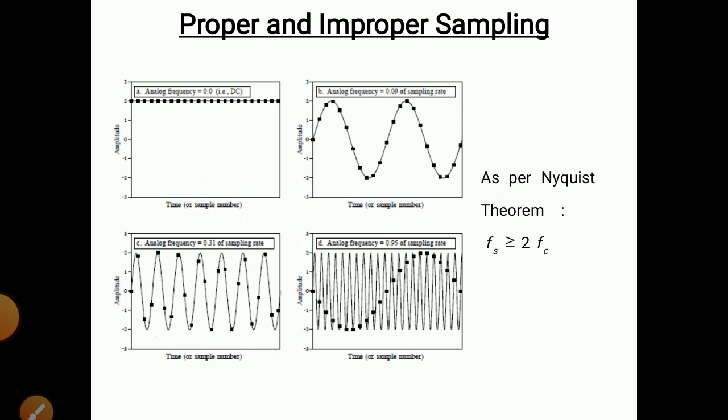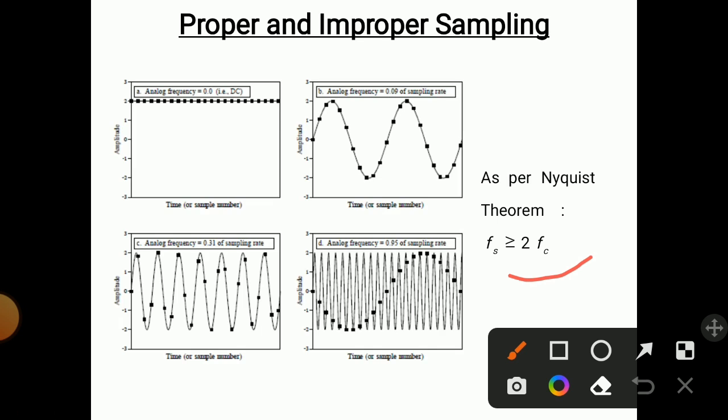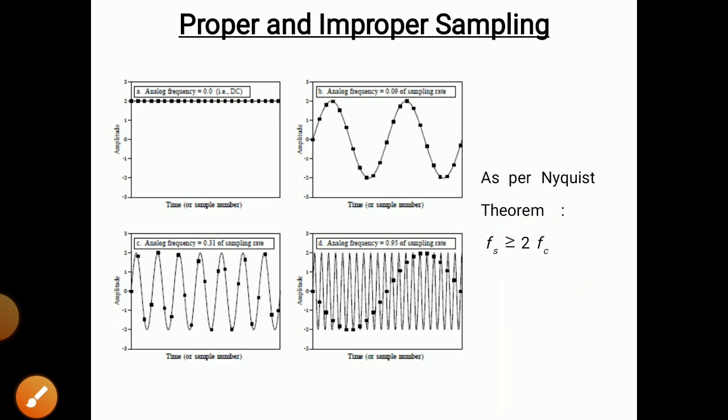There are two types of sampling: proper and improper sampling. Proper and improper sampling depends upon the sampling rate. The sampling rate FS should be greater than or equal to two times the frequency of the analog signal. This is called the Nyquist theorem — the sampling frequency should be greater than or equal to two times the original signal frequency.